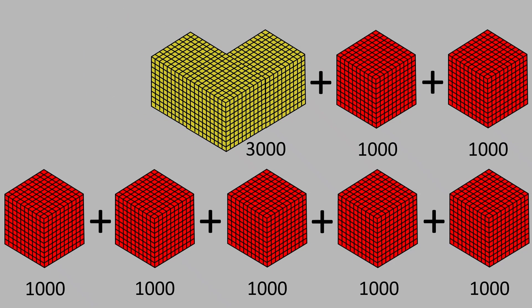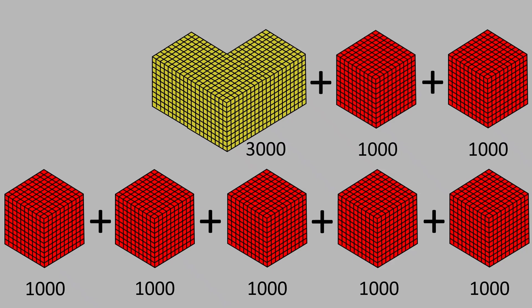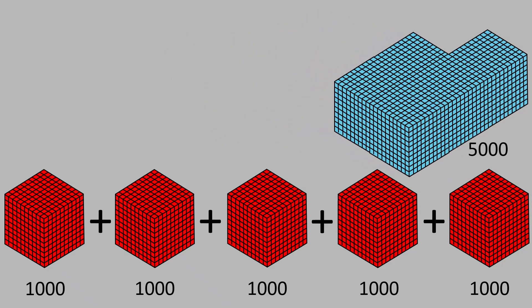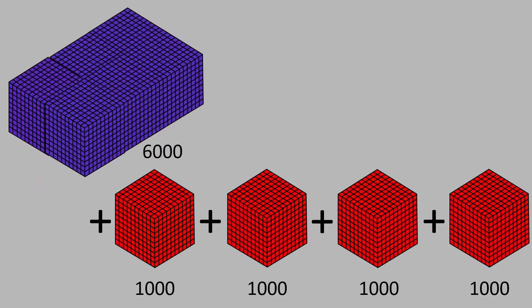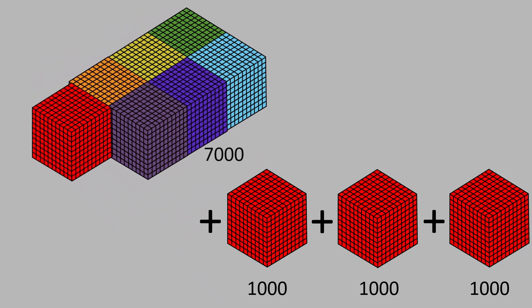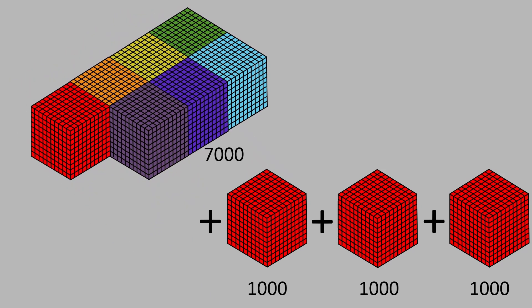3,000 plus 1,000 is equal to 4,000. 4,000 plus 1,000 is equal to 5,000. 5,000 plus 1,000 is equal to 6,000. 6,000 plus 1,000 is equal to 7,000.